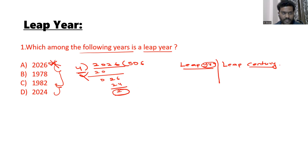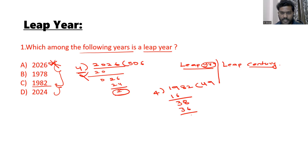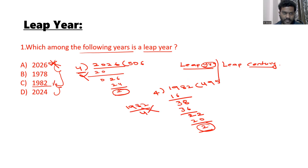Similarly, check 1982. Divide 1982 by 4: 4×4=16, remainder 3; bring down 38, 4×9=36, remainder 2. The remainder is 2, so 1982 is not divisible by 4. Therefore 1982 is also not a leap year.